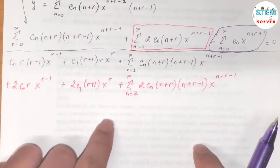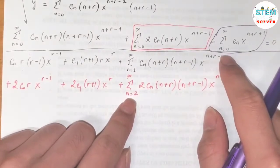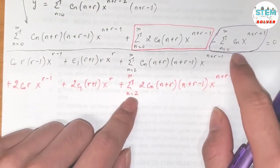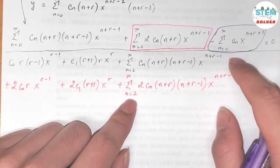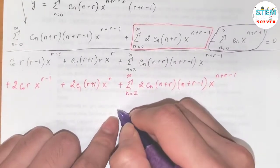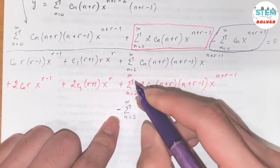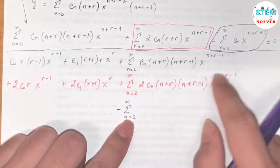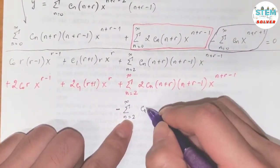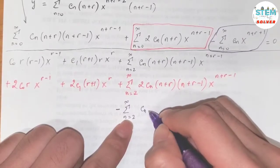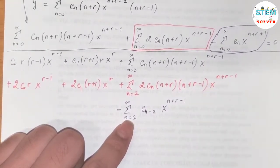For the last series, notice all three begin at n=0, but this third series has x to the (n+r+1). I will re-index it: shifting the index to start at 2, subtracting 2 from every n inside, giving a power series from 2 to infinity: c_{n-2} x to the (n+r-1). All set equal to zero.